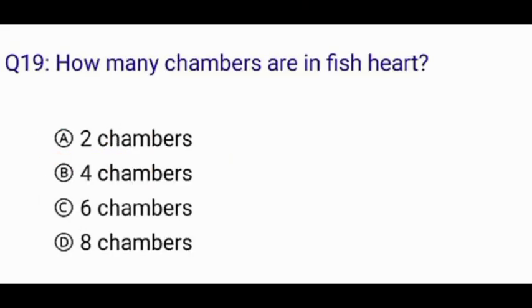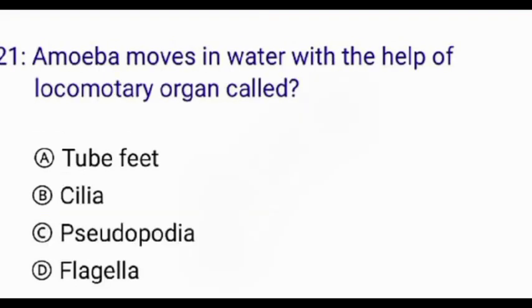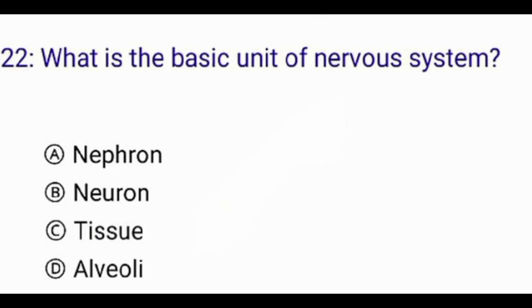How many chambers are in a fish heart? The correct answer is option A: 2. In humans, the ribs are attached to — the correct answer is option C: sternum. Amoeba moves in water with the help of a locomotory organ called — the correct answer is option C: pseudopodia.